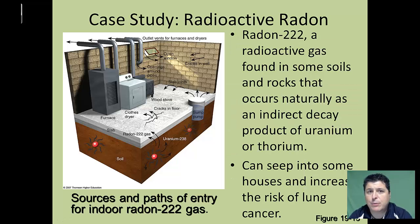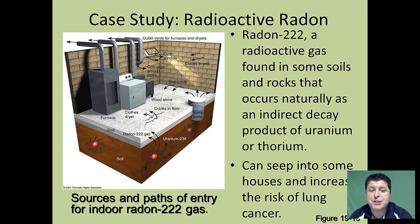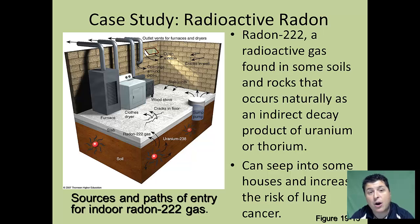Our last major group of pollutants is radon, which is really only an indoor air pollutant. It's a radioactive gas found in some soils and rocks, occurring naturally as a daughter product from the decay of uranium or thorium in the soil. In areas rich in uranium or thorium that produce a lot of radon, it can get inside the home through cracks in basements and increase the risk of lung cancer. In areas where radon risk is highest, radon detectors and radon remediation systems are required.